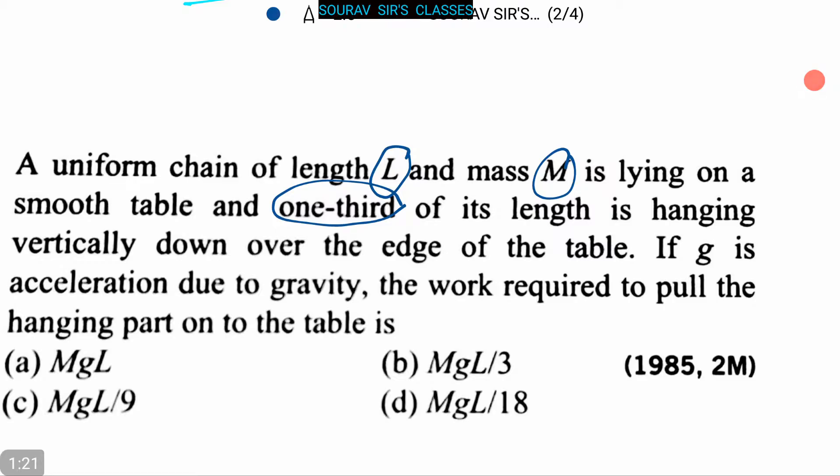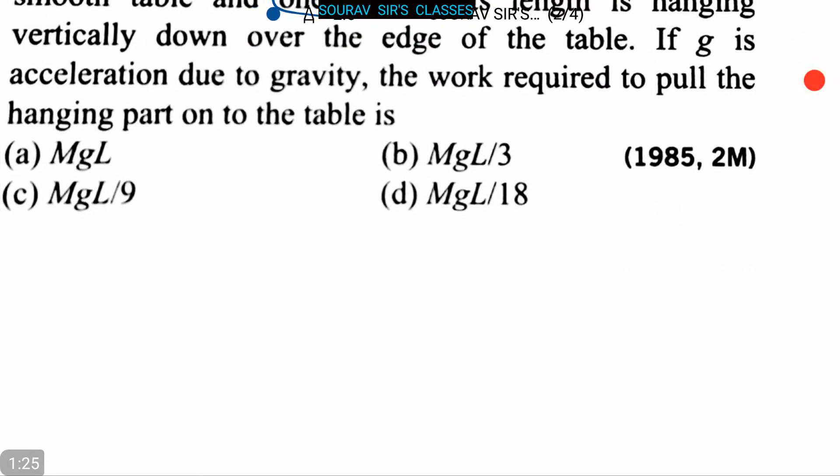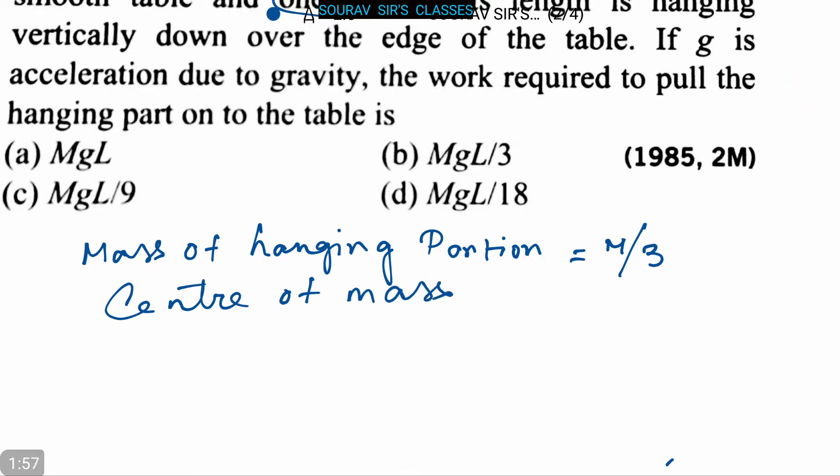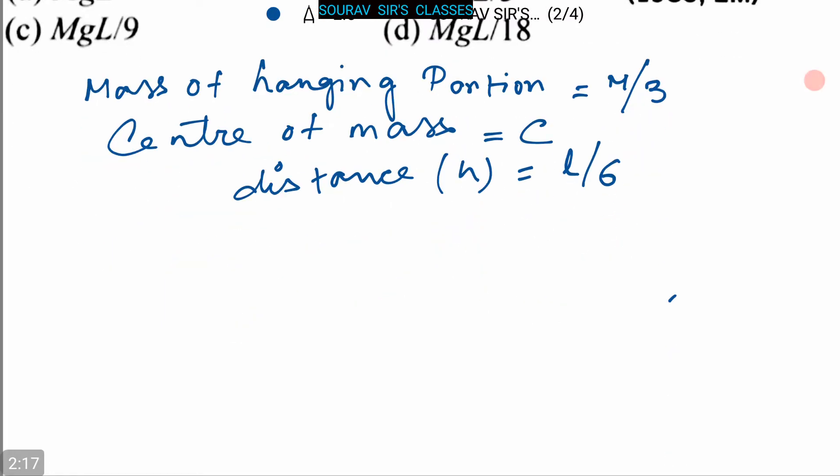Let's proceed to the solution. Mass of the hanging portion is one third of the mass, so M/3. The center of mass is C, and the distance H equals L/6 on the tabletop. Therefore, let us draw the figure first.